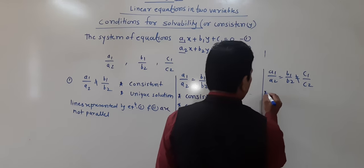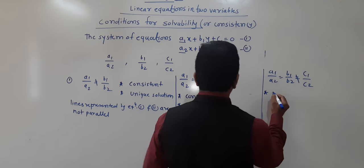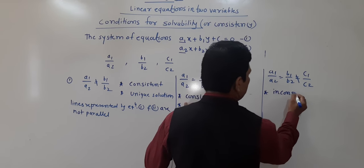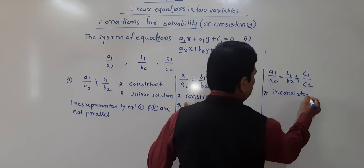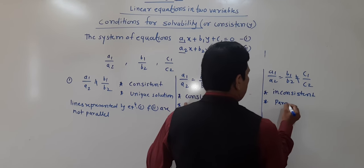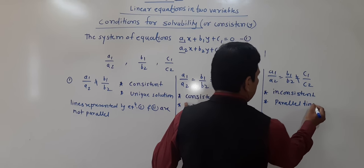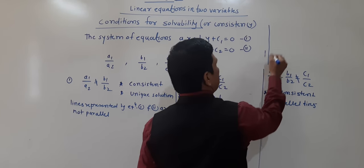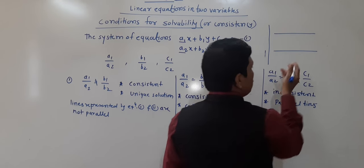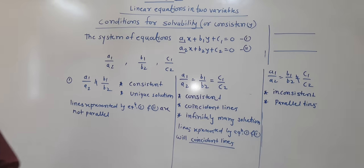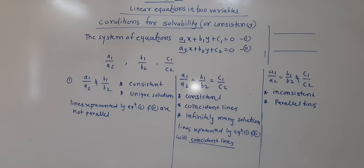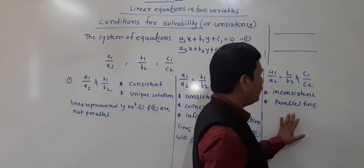Here we can say the lines are parallel. Parallel lines are inconsistent — not consistent. Parallel lines will not intersect, so how many solutions will you get? Lines represented by equations first and second are parallel and non-coincident. So this is inconsistent and the lines are parallel.